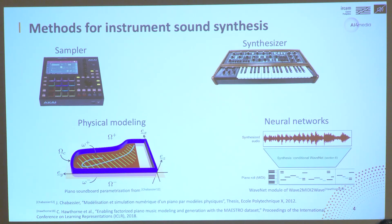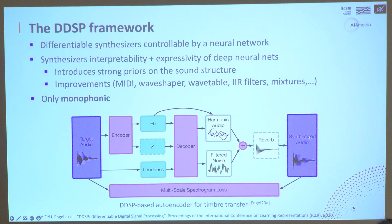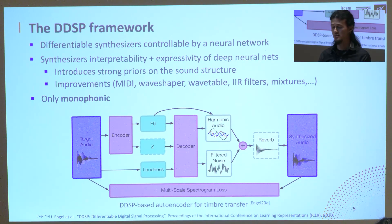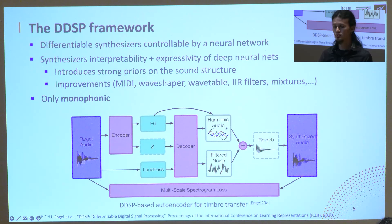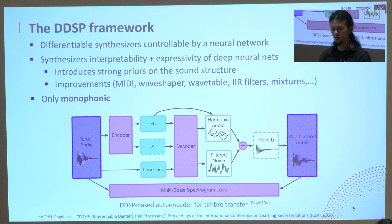A recent intermediate proposed between signal-based and neural-based synthesis is DDSP — Differentiable Digital Signal Processing. They implemented a synthesizer in a differentiable way, which makes it controllable by neural networks, so we can have both the interpretability of synthesizers and the expressivity of neural networks. The differentiable components introduce strong priors on the sound structure, which alleviate the need for huge amounts of training data.